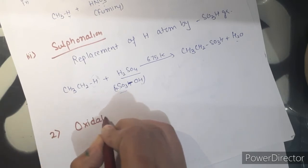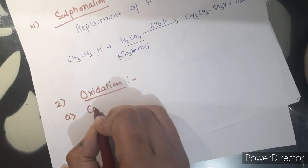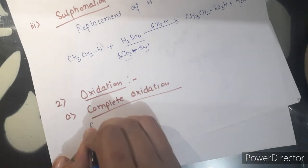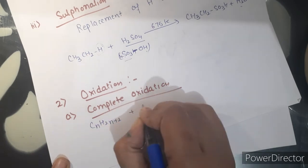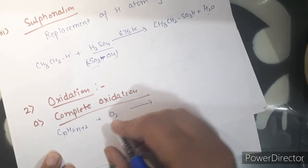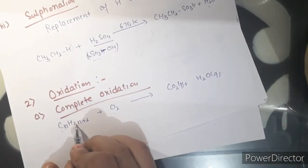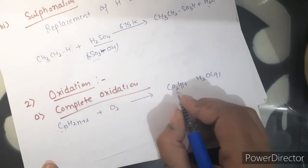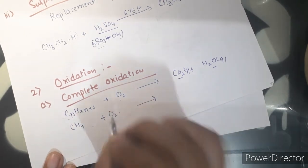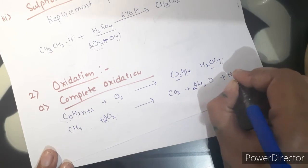Second reaction given by alkanes is oxidation. They give different types of oxidation: complete oxidation, incomplete, and catalytic oxidation. In complete oxidation, when alkane reacts with oxygen and burns completely in the presence of air, it produces carbon dioxide and water along with a large amount of heat. For example, when methane burns in air, it produces CO2 plus H2O.